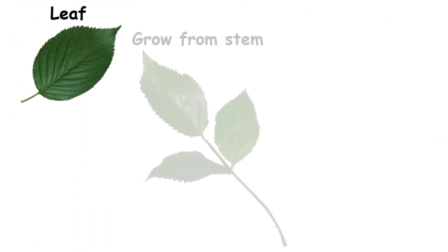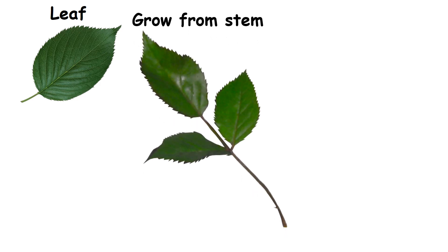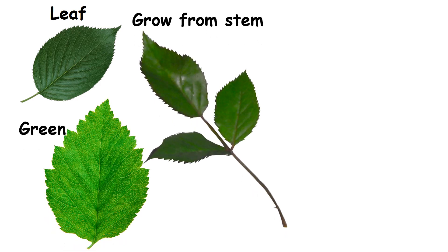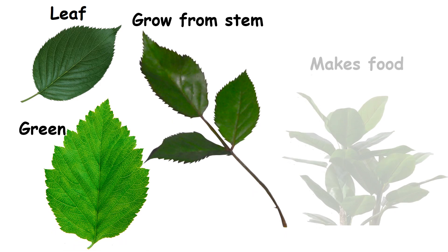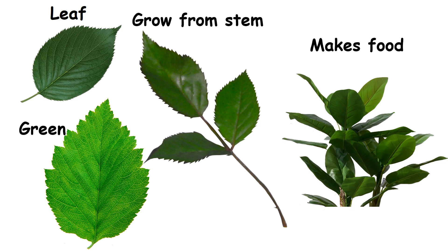Leaf. Leaves grow from the stem. Most of the leaves are green in color. They make food for the plant.